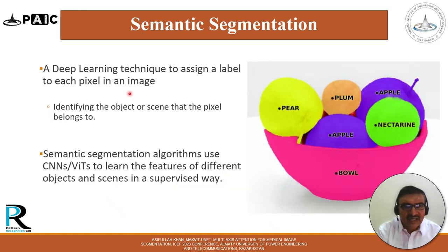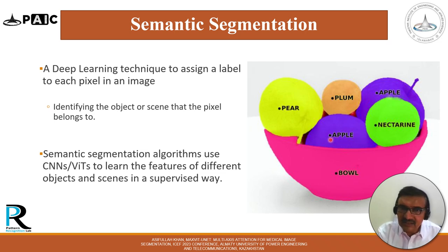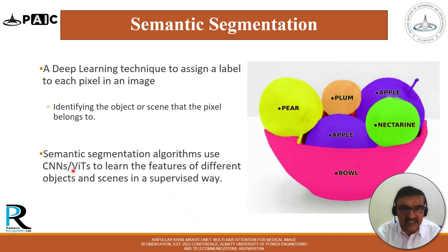Semantic segmentation is a deep learning technique that assigns a label to each pixel in an image, identifying the object or scene that pixel belongs to. For example, in a bowl of fruit, pears, plums, and apples are classified into their respective classes. Semantic segmentation algorithms use convolutional neural networks or vision transformers to learn the features of different objects and scenes in a supervised way.